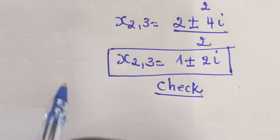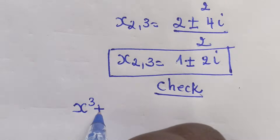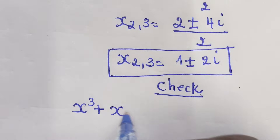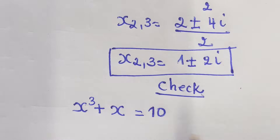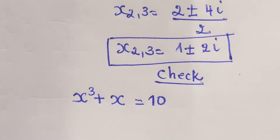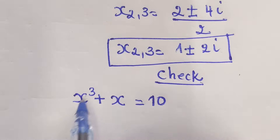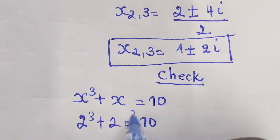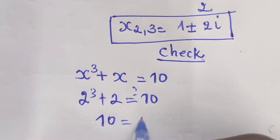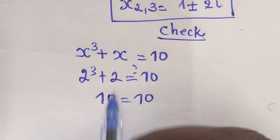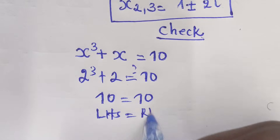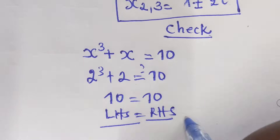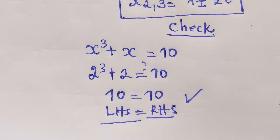By checking if our answer is correct: x³ + x = 10. With x = 2, we get 2³ + 2 = 8 + 2 = 10. Left hand side equals right hand side. Thanks for watching, don't forget to share and subscribe.